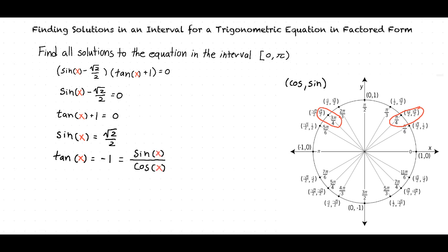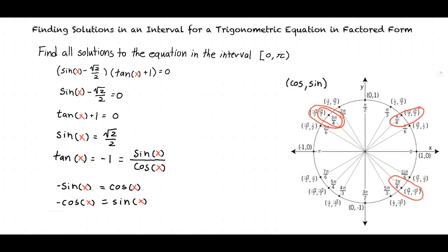We also know that tangent x is equal to sine of x over cosine of x. So since tangent x has to be equal to negative 1, we want to find values for x where either negative sine x equals cosine x, or negative cosine x equals sine x. Looking at the unit circle, we can see that negative sine x equals cosine x when x is equal to 7π over 4, and negative cosine x equals sine x when x is 3π over 4.